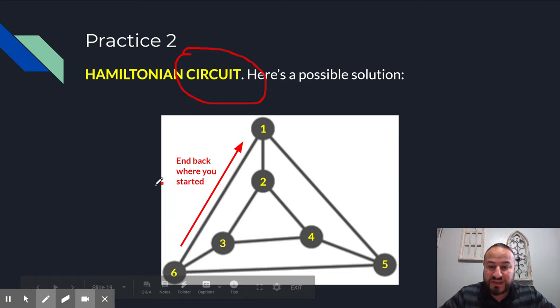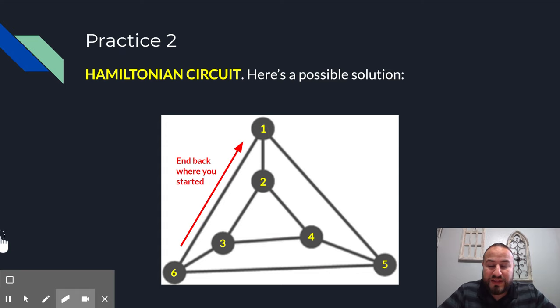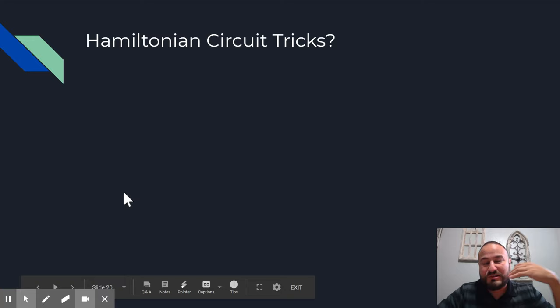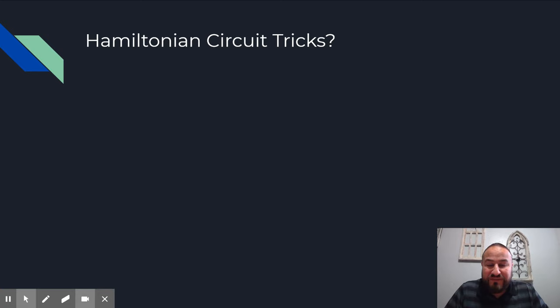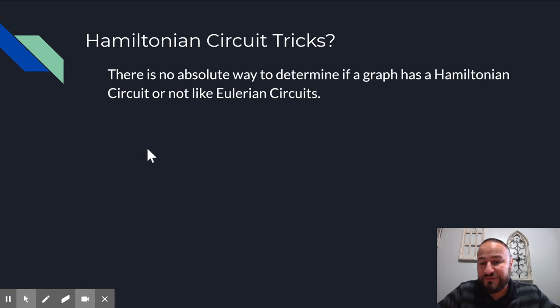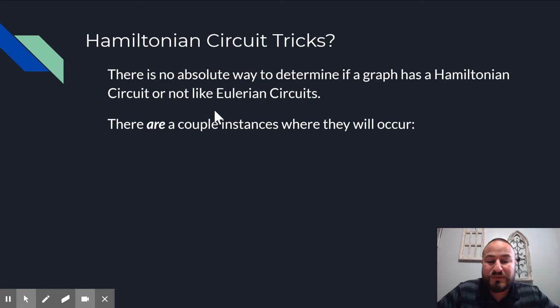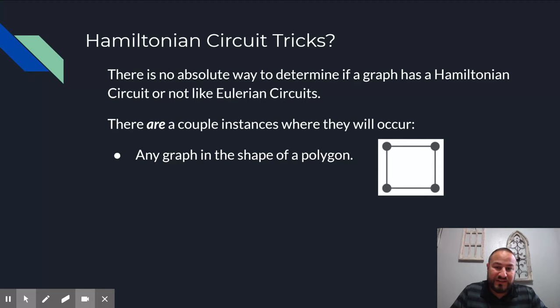So we now know the difference between Hamiltonian path and a Eulerian path or graph. The one thing that you might want to know is that, hey, is there a trick to find a Hamiltonian circuit? And if you remember back to Eulerian, if every vertex has an even degree, it has to have a Eulerian circuit. That was, that's a proof that we, it's true all the time. Unfortunately there's no such proof for Hamiltonian circuit. There's not an absolute way to always tell, but there are some, a couple of instances where they will occur, such as like if the graph is in the shape of a polygon, obviously if it's in the shape of any polygon, no matter how many number of edges and sides, you can just go around the perimeter to create a Hamiltonian circuit.